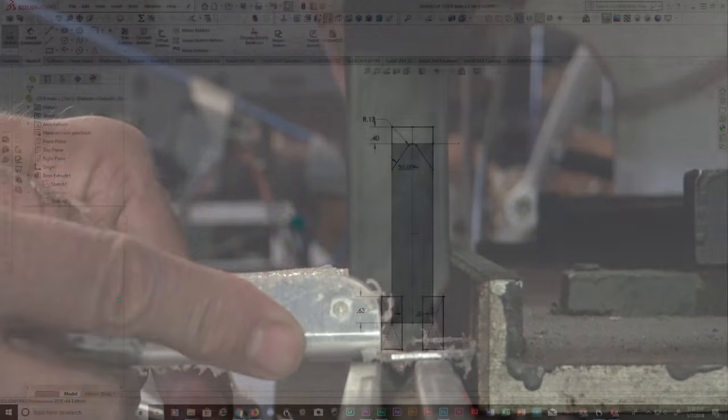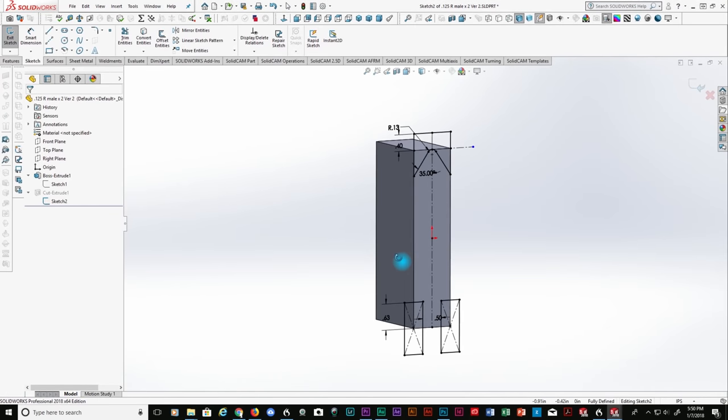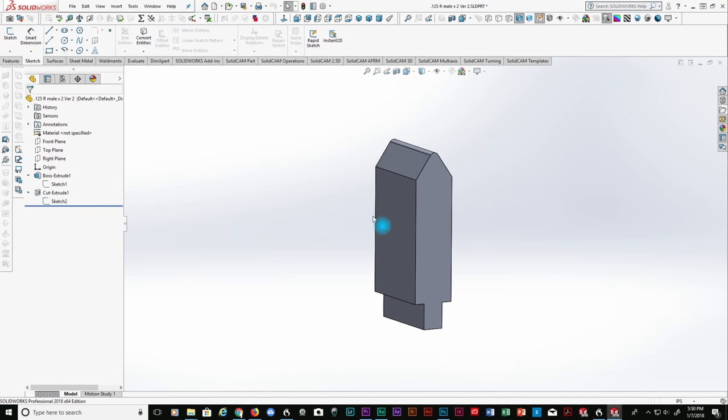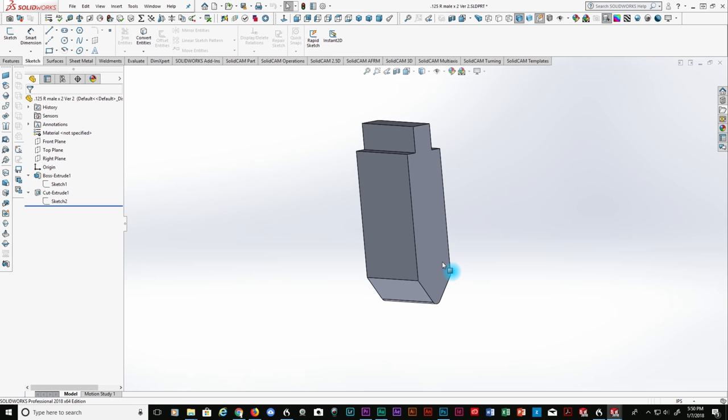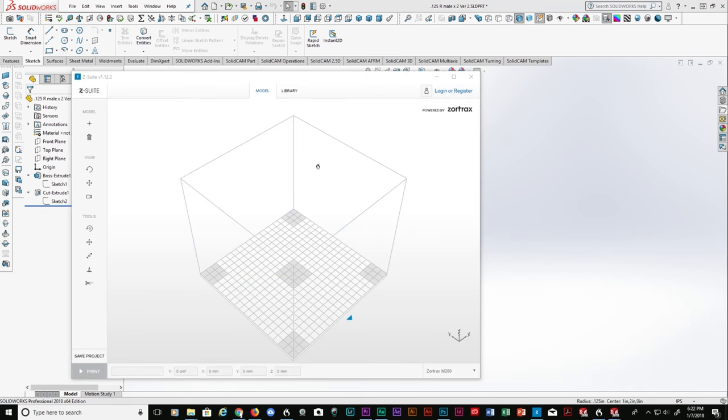So in SOLIDWORKS we simply designed a male die to fit our exact specifications. We then extruded the profile to the width required to bend this specific flange. After we were done with that, we exported the SOLIDWORKS drawing into an STL file.